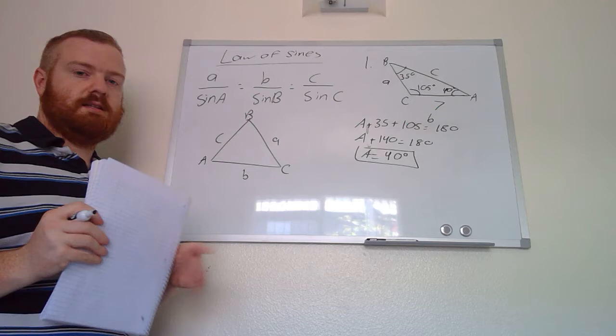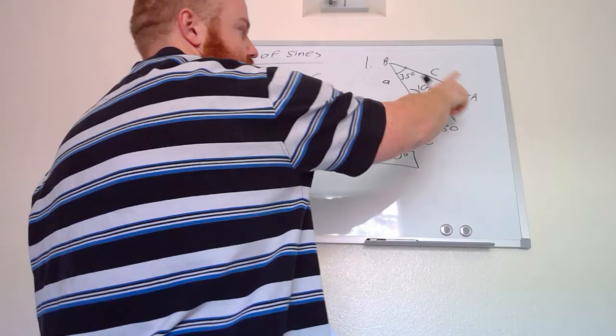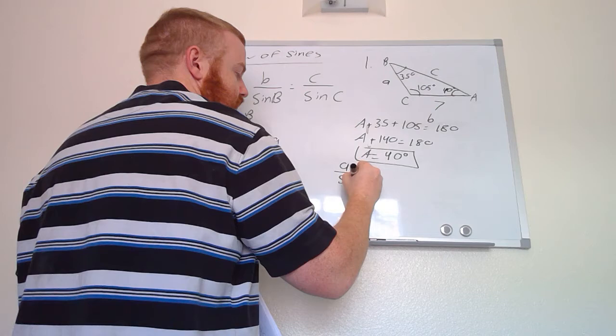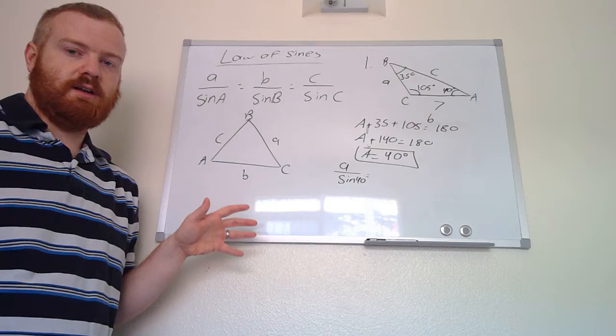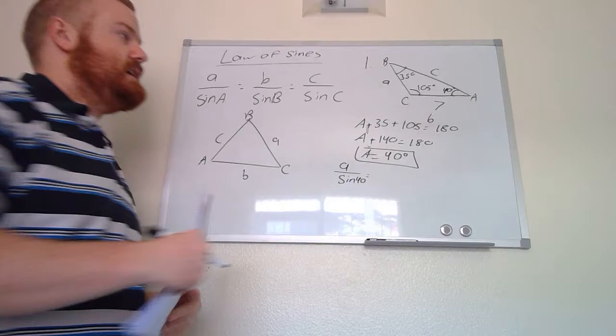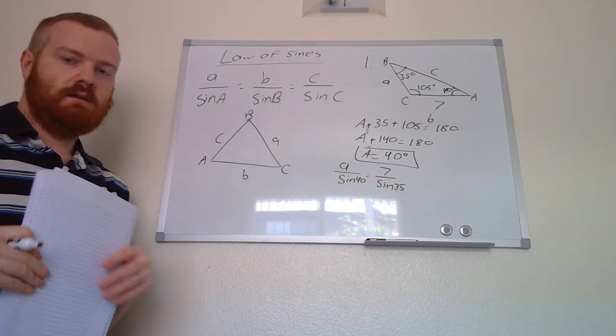Now we have all three angle measurements, so we just need to solve for the two missing side lengths. Since we have all the angles, the order doesn't matter — I usually go alphabetical. To find side a, we set up a over sine of 40 degrees. We look at the triangle for a known side length — side b is 7 — so we set this equal to 7 over sine of 35 degrees.